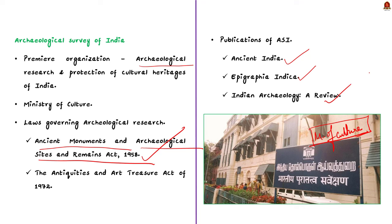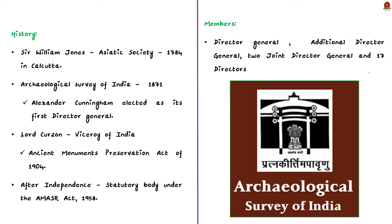The findings of ASI are released in their publications, including Ancient India, Epigraphia Indica, and Indian Archaeology — A Review. Tracing the origin of ASI: archaeological and historic pursuits in India began with Sir William Jones, who founded the Asiatic Society on 15th January 1784 in Kolkata. Later in 1871, the Archaeological Survey of India was created as a government department with Alexander Cunningham as its first Director General. Cunningham is also known as the Father of Indian Archaeology.